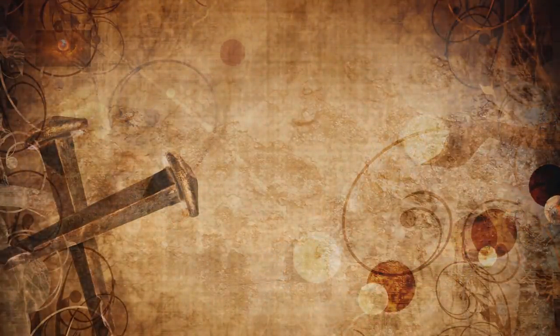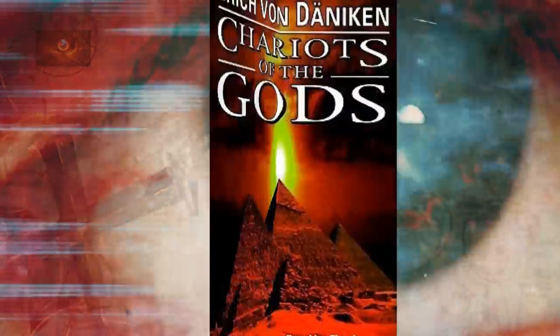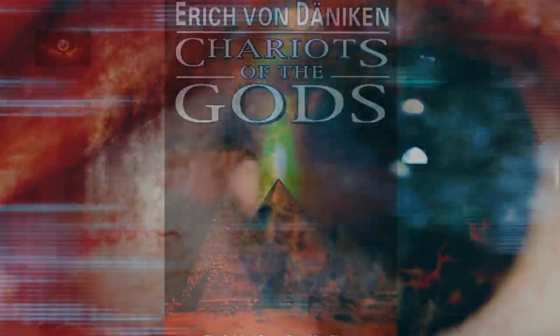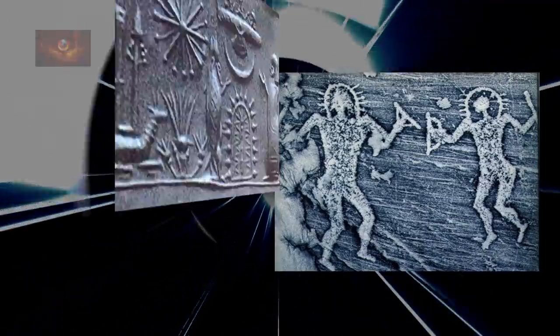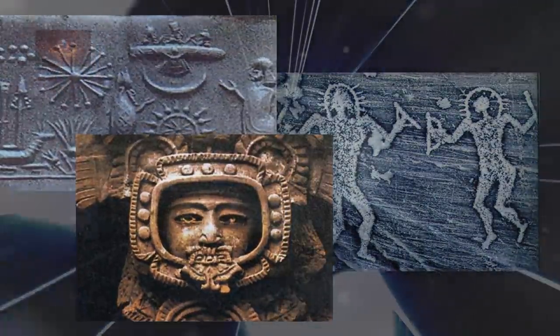The idea first gained widespread exposure with the 1968 publication of Chariots of the Gods by Erich von Däniken, but the concept has been around since the middle of the 19th century. A common variant of the idea includes proposals that deities from most, if not all, religions, including angels and demons, are actually extraterrestrials.